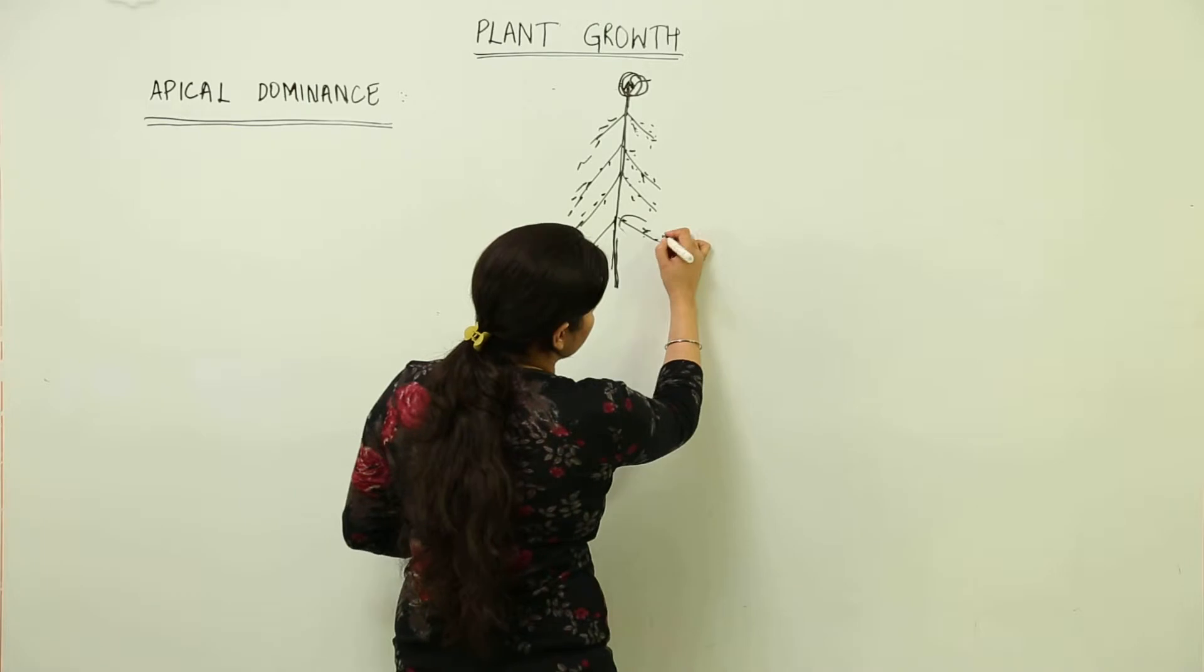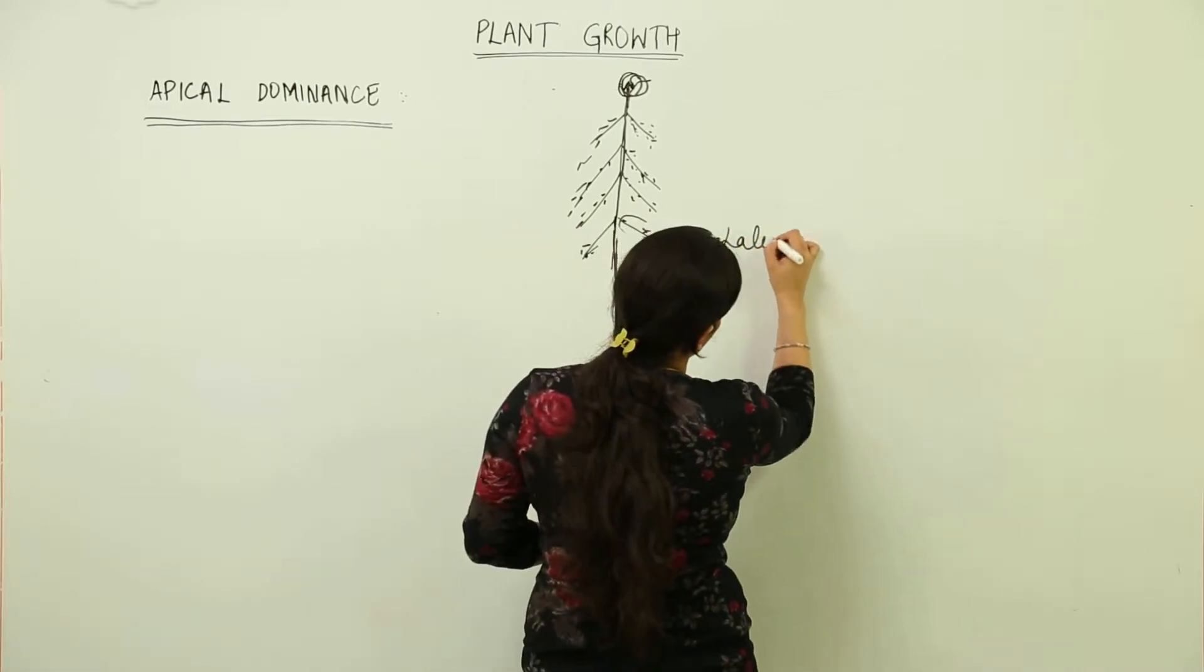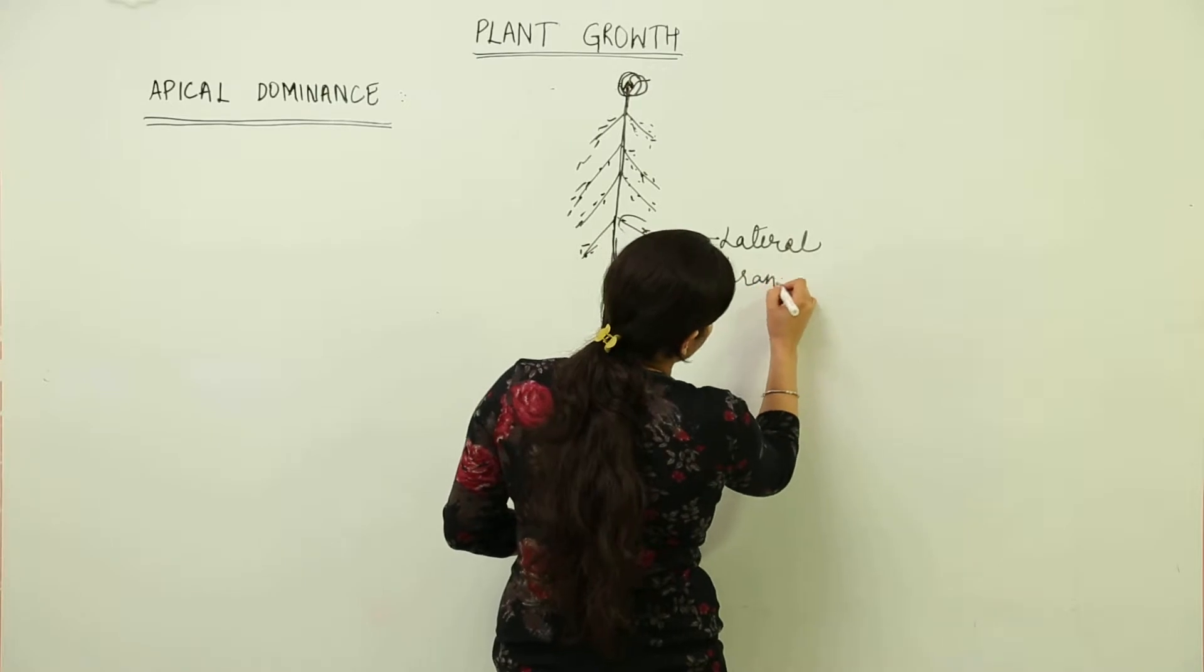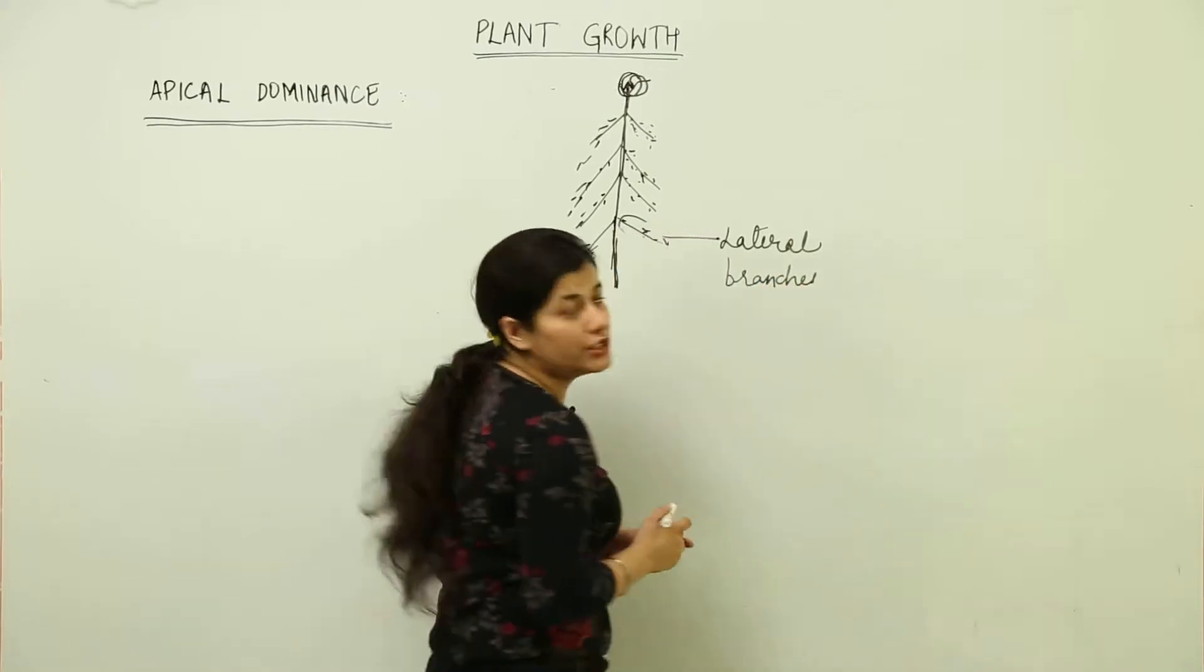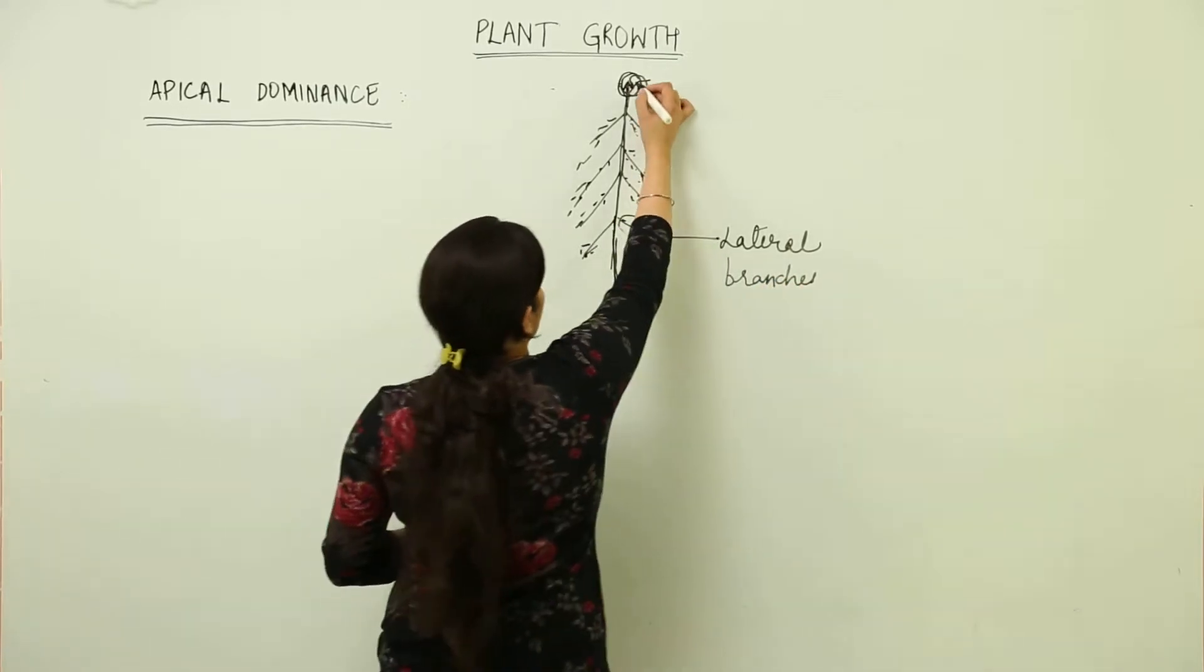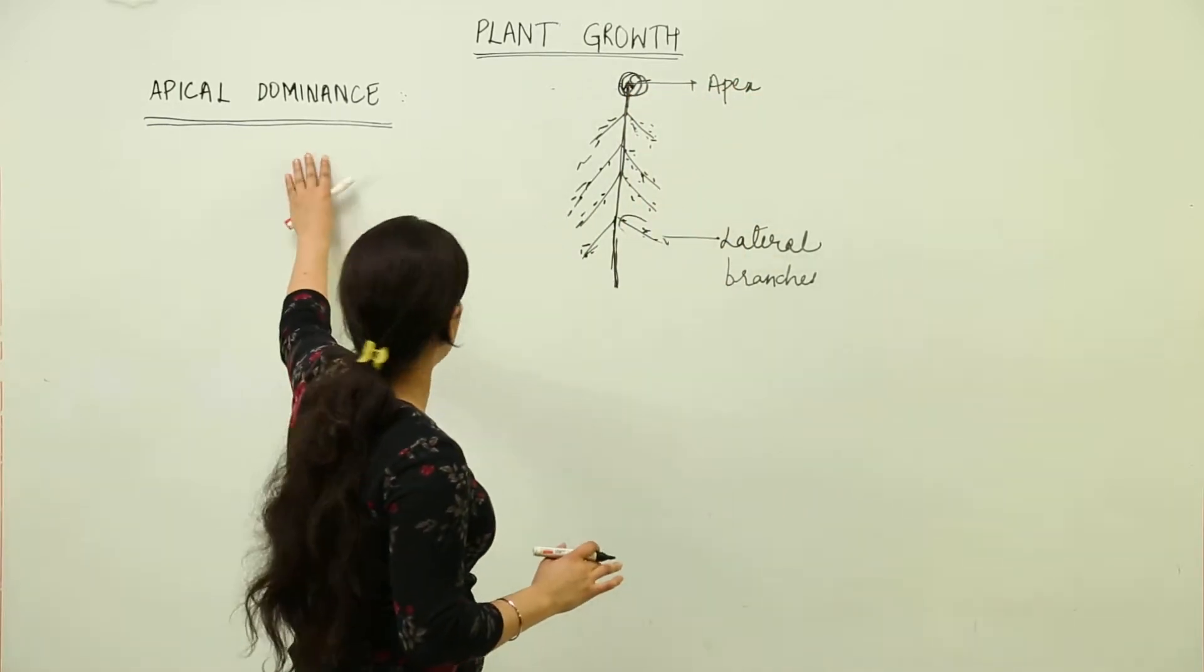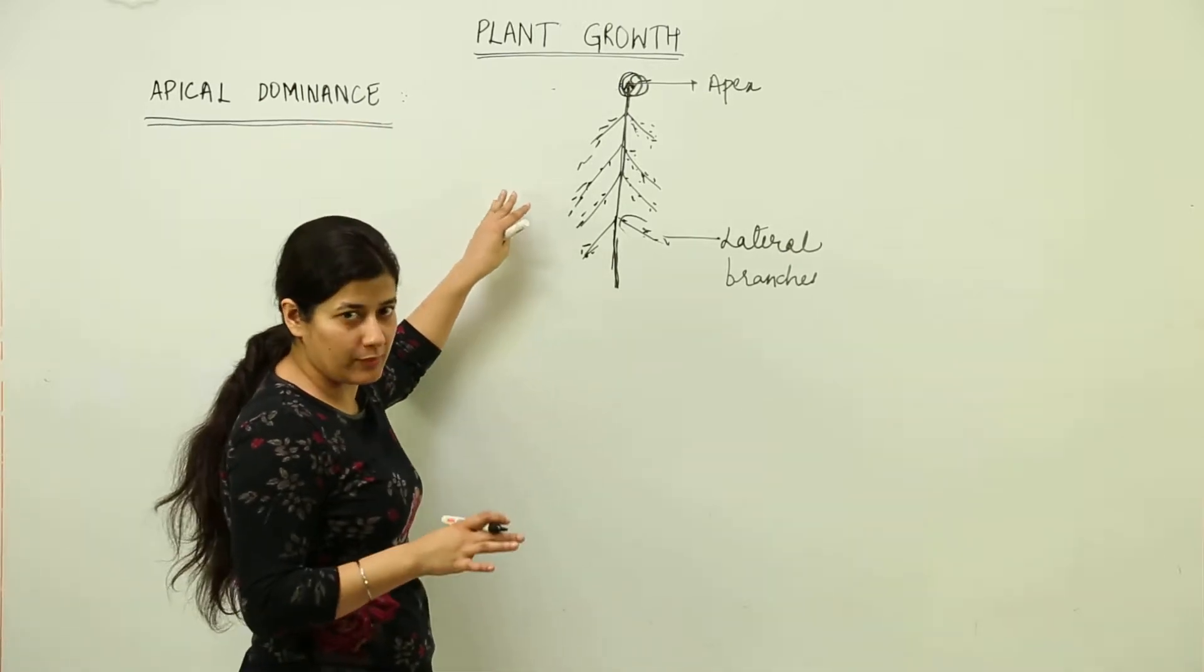This is the lateral branch. This one is lateral branch. So what I said in the beginning is that the lateral branches would have lesser growth in comparison to the apex. This one is the apex, the shoot apex. As the term suggests, apical would have to do something with apex.